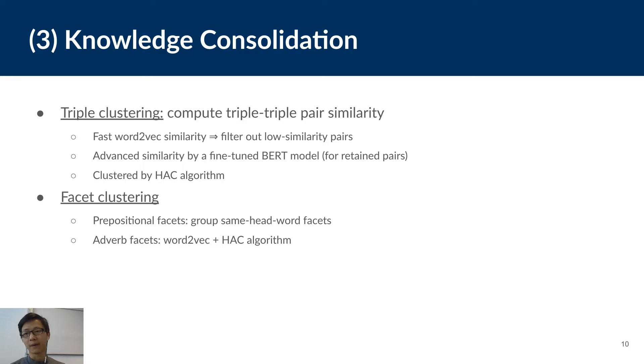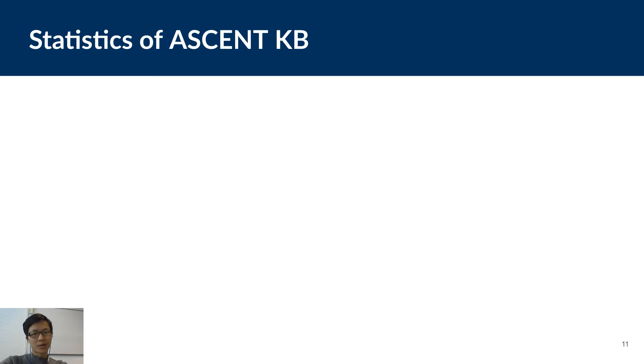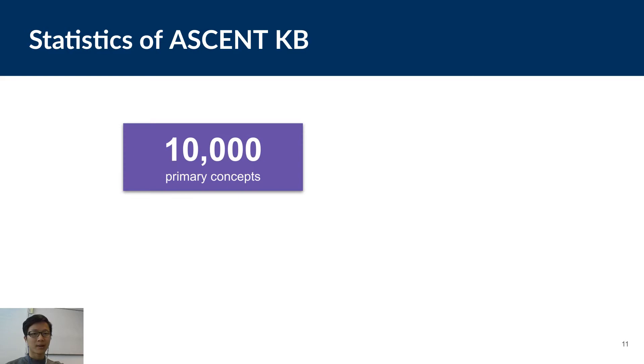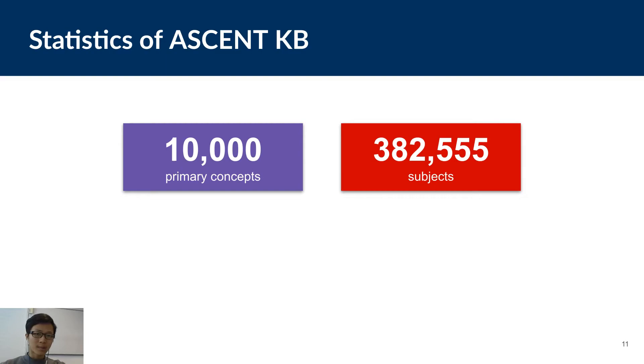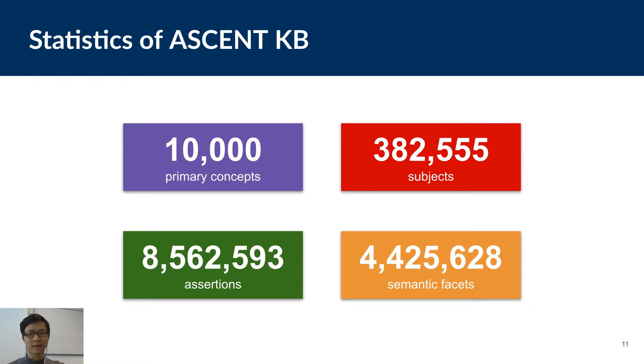So, that is it for the methodology. In the next session, I'll show you some important results of our experiments. First of all, it is the knowledge base we have created with our pipeline. We executed the pipeline on 10,000 most popular concepts from ConceptNet. We have expanded those concepts to more than 382,000 refined subjects, from which we have more than 8.5 million assertions and more than 4.4 million semantic facets.